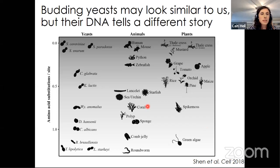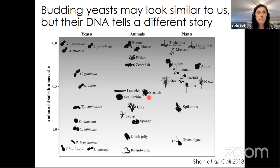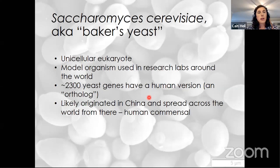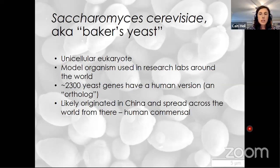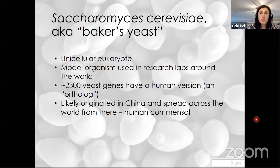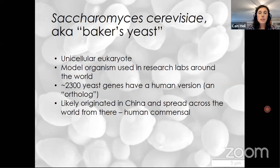Today we're going to talk about Saccharomyces cerevisiae in particular, which is one of the most commonly found yeasts in bread and beer — also why it's known as the baker's yeast or brewer's yeast. Saccharomyces cerevisiae is a unicellular eukaryote, so yeast belong to the domain of life that includes plants and animals. However, they're much simpler than many plants and animals, being just a single cell. This trait, along with other traits, makes them very useful for studying basic biological and chemical processes in the lab, which is why we often call them a model organism.